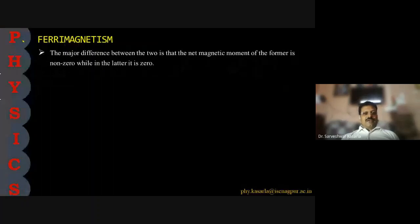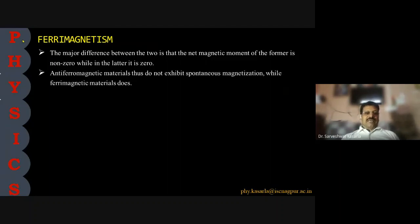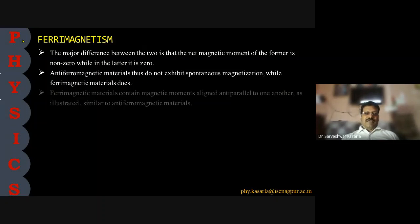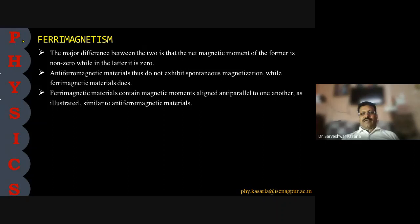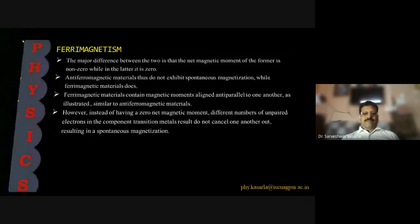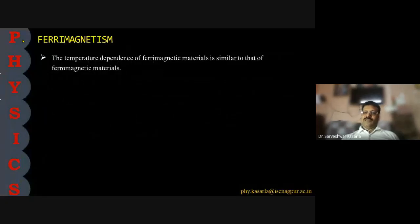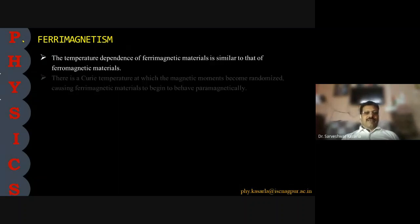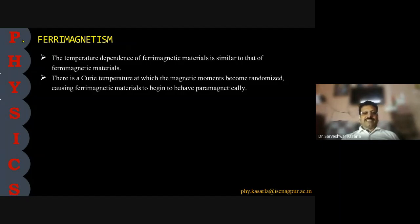The major difference is that the net magnetic moment of ferrimagnetic materials is non-zero, while for anti-ferromagnetic materials it is zero. Anti-ferromagnetic materials thus do not exhibit spontaneous magnetization, while ferrimagnetic materials do. Ferrimagnetic materials contain magnetic moments aligned anti-parallel, similar to anti-ferromagnetic materials; however, different numbers of unpaired electrons in the component transition metals result in moments that do not cancel, producing a spontaneous magnetization. The temperature dependence of ferrimagnetic materials is similar to that of ferromagnetic materials — there is a Curie temperature at which magnetic moments become randomized, causing ferrimagnetic materials to begin to behave paramagnetically.